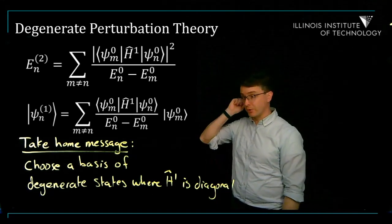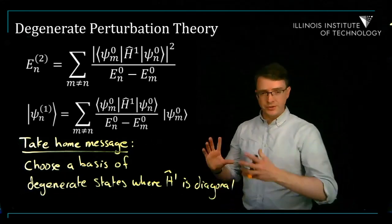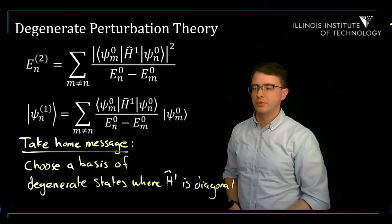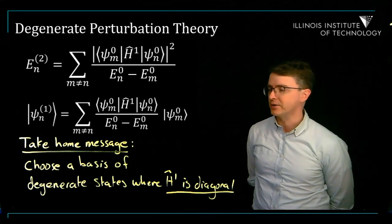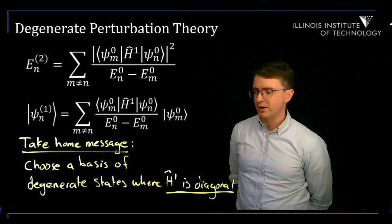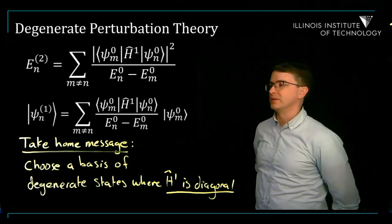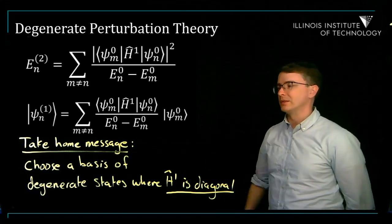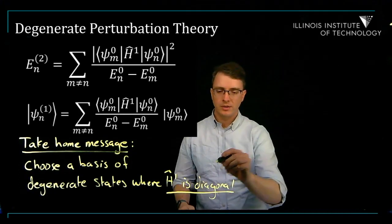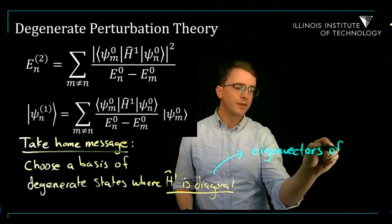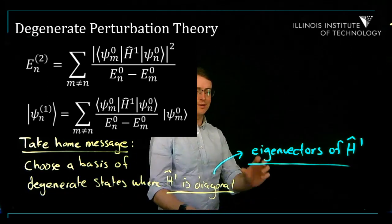The take-home message is: when doing perturbation theory with degenerate energy states, you have freedom to choose your basis among those degenerate states. The right basis to use is the one where H1, the perturbing Hamiltonian, is diagonal. Choosing this basis means you won't run into problems — perturbation theory will be consistent, and it also fixes the zero-denominator problem because the off-diagonal numerator elements will be zero when E_N equals E_M. To find these states, you simply find the eigenvectors of H1 within the degenerate subspace.